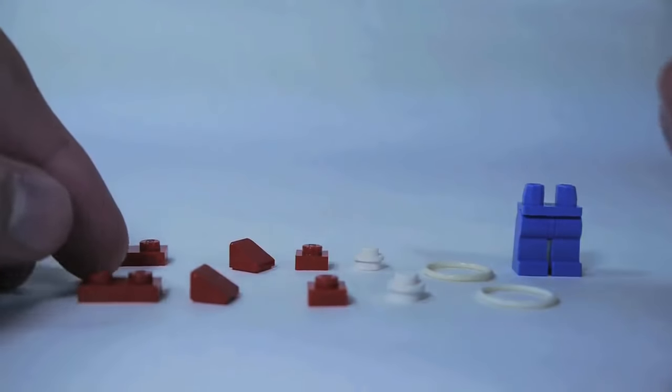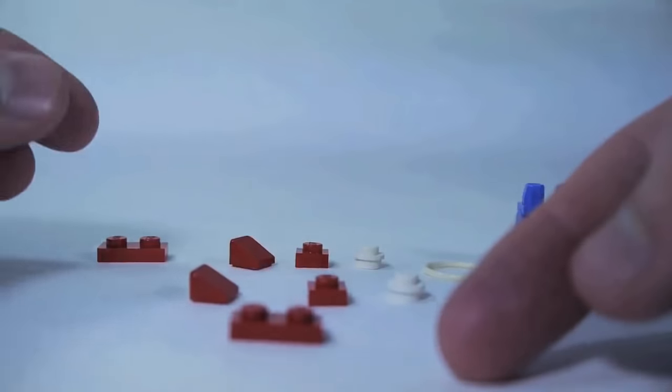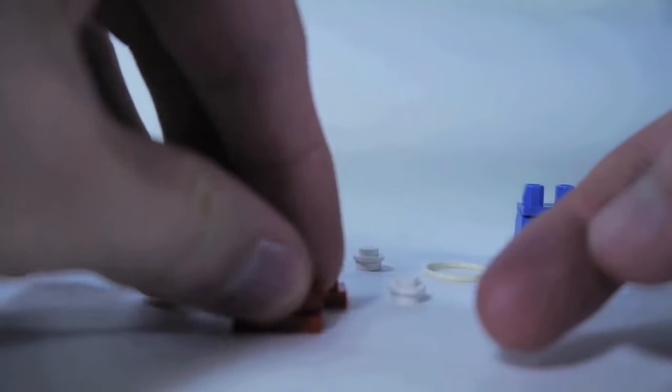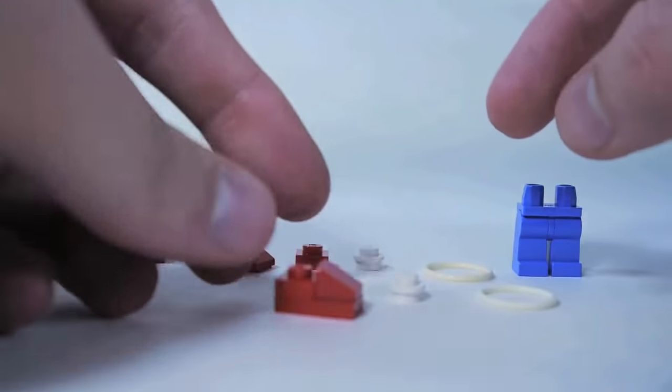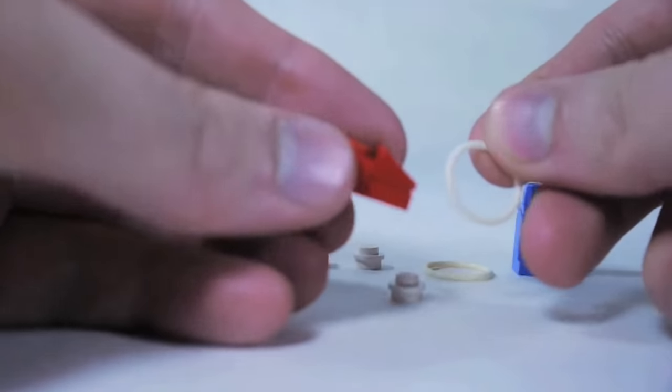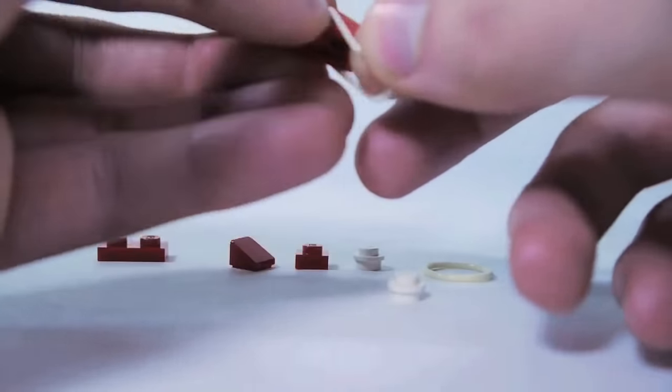Now that you've done that, let's begin. So we're going to start with the shoes: red 1x2 plate here, red cheese slope, red 1x1 plate. Then if you have it, we're going to take this white rubber band.